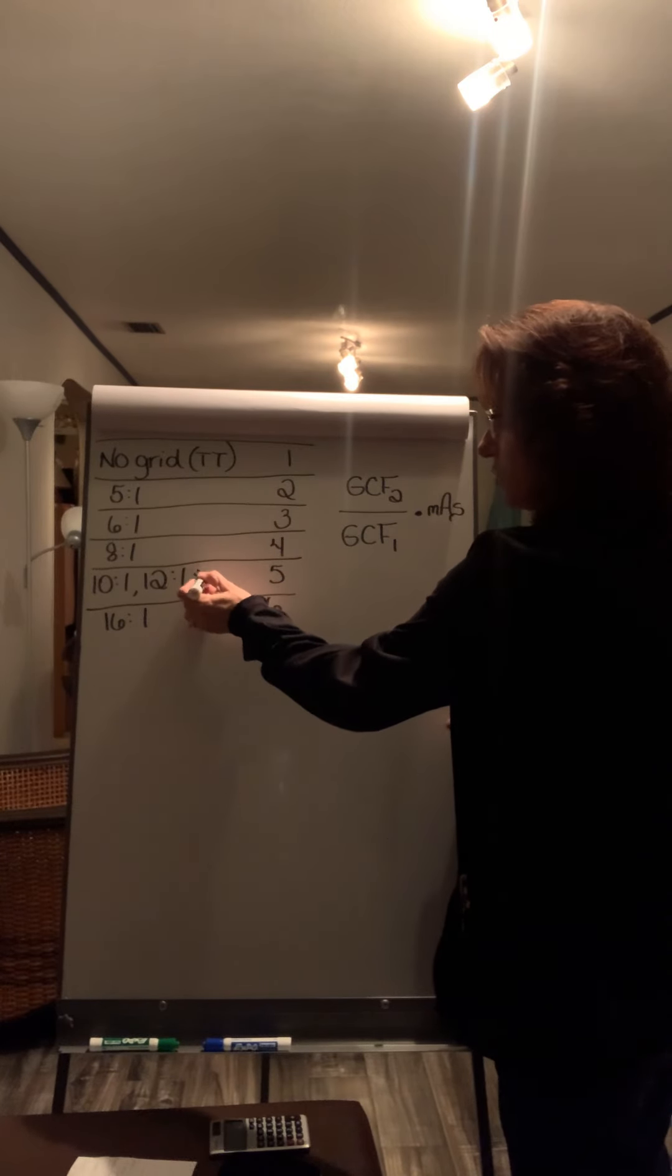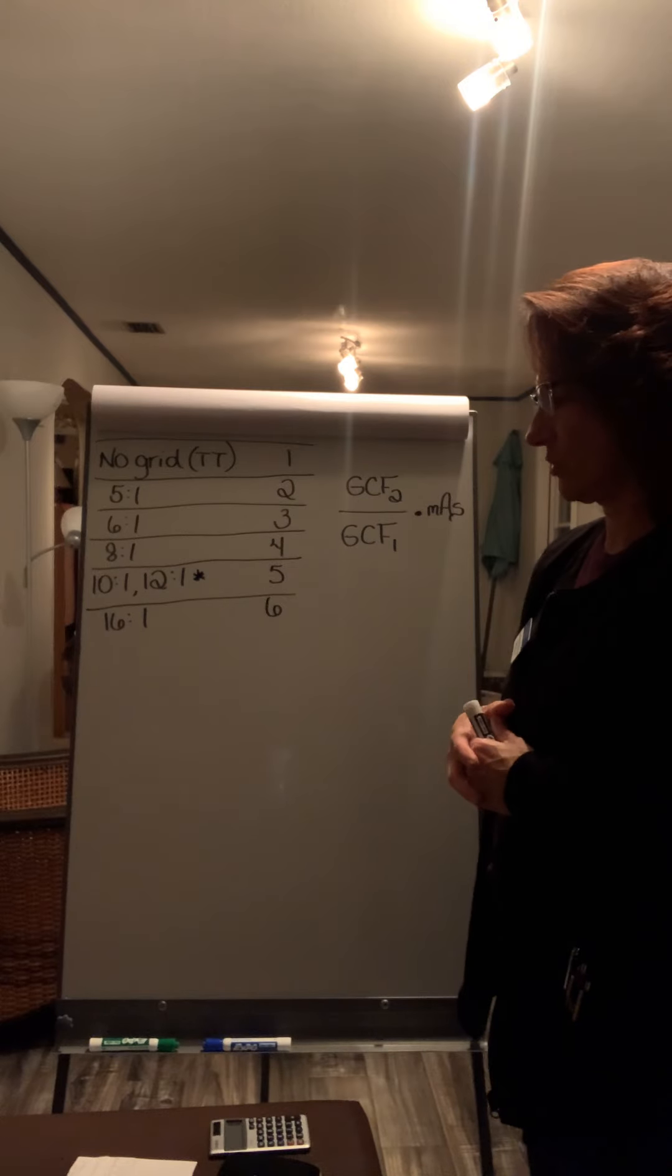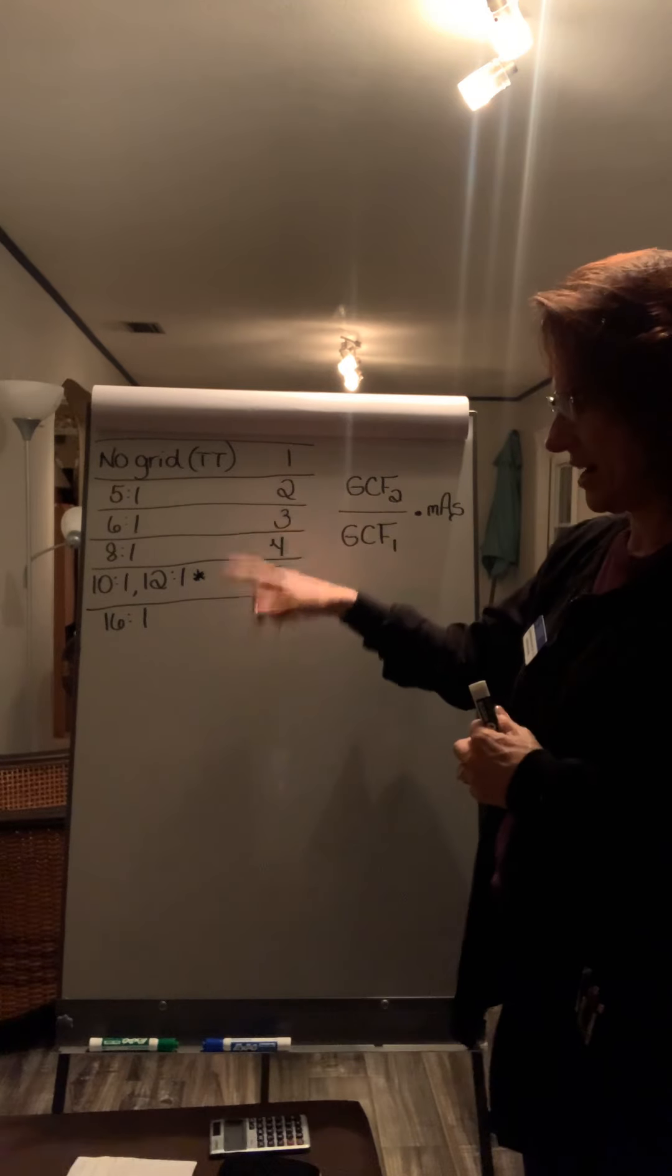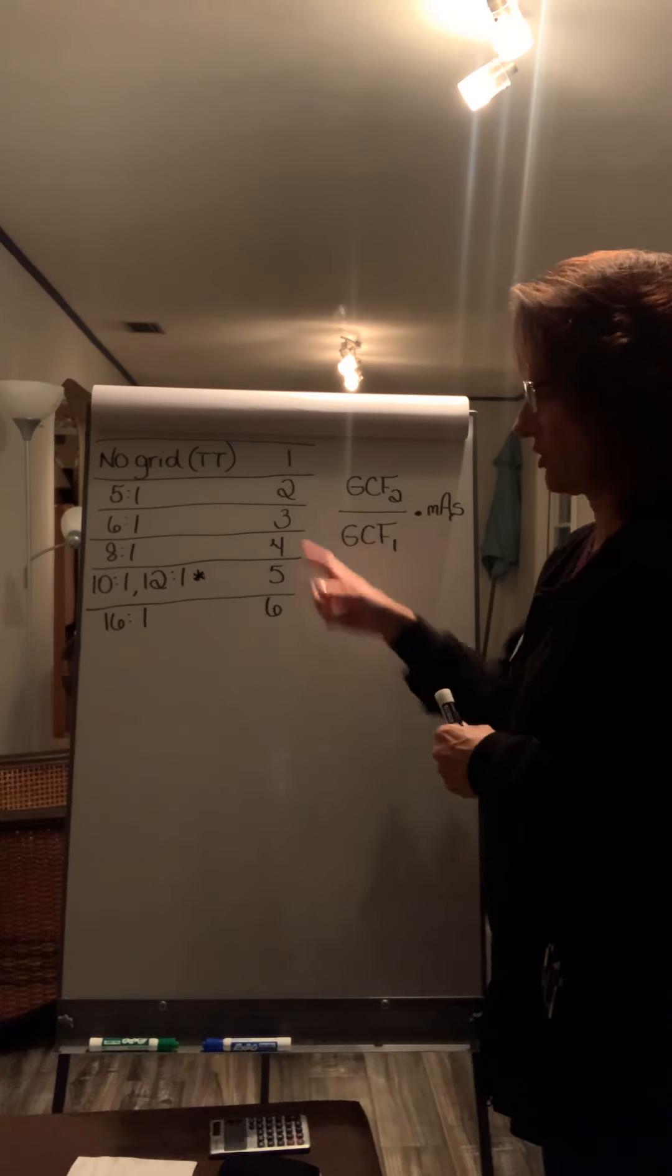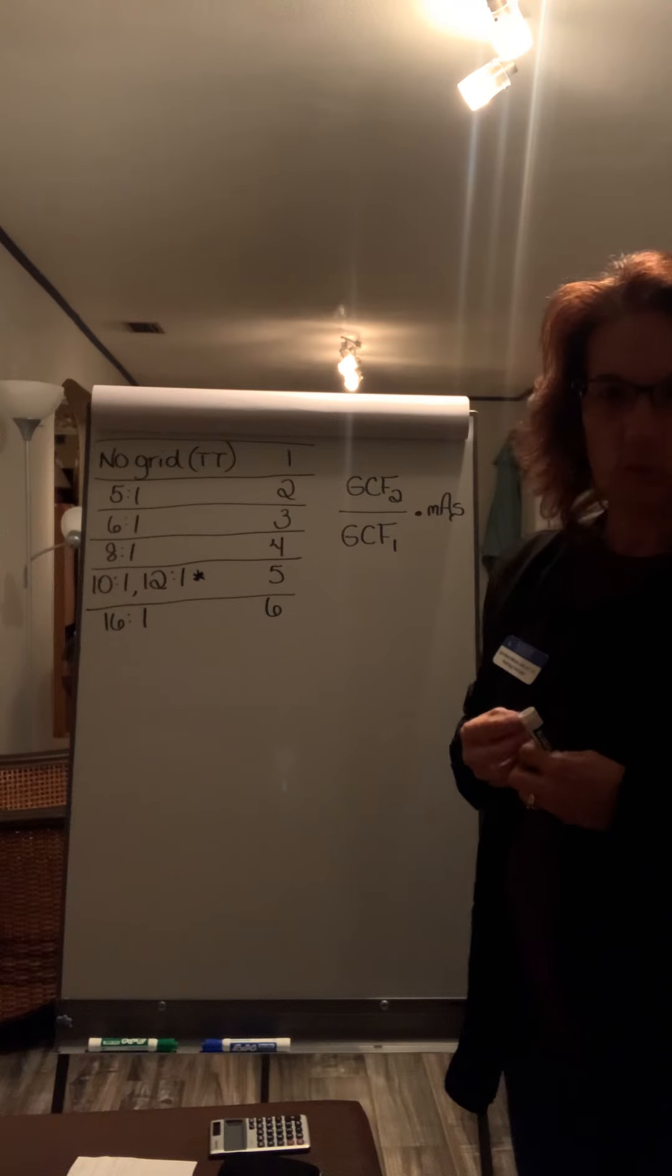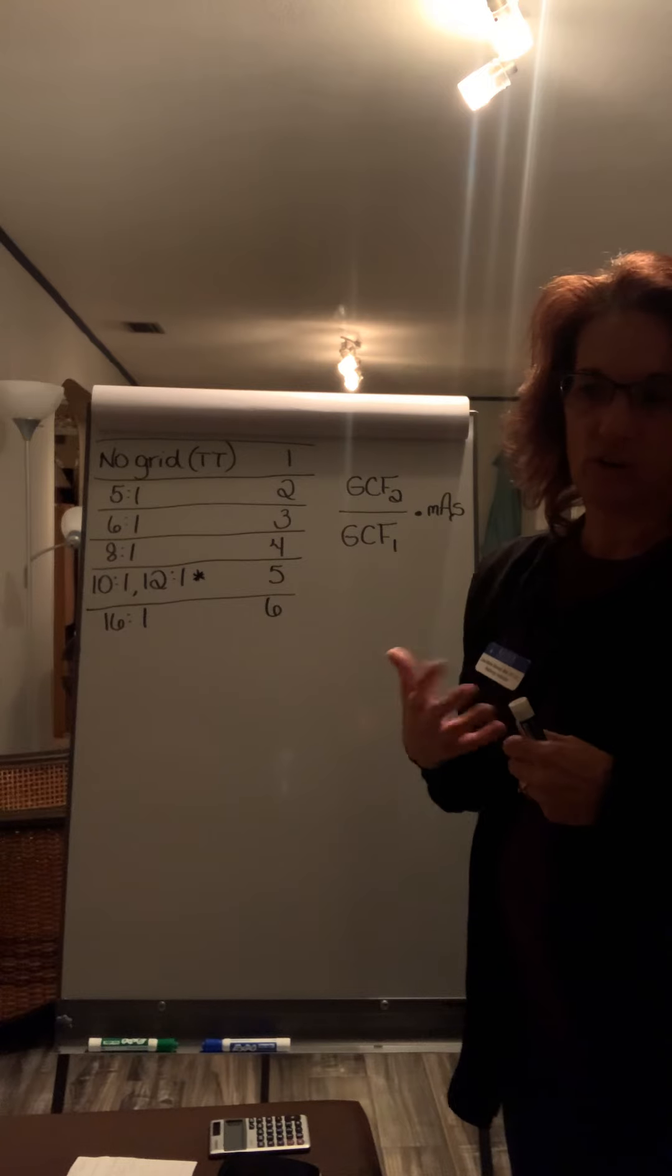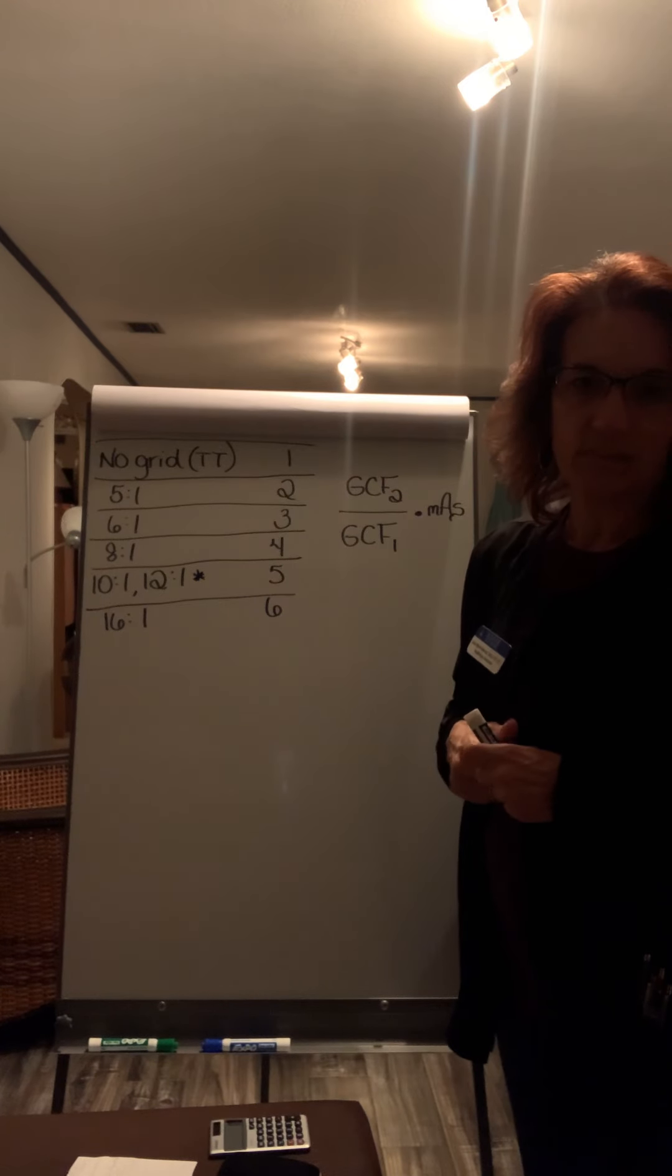Now the significance about the 10 and 12 to 1 is that most wall buckies and table buckies are either 10 or 12 to 1 grid ratios. The lower the grid ratio means there's less lead content in there. So they clean up scatter, but not as well as a higher grid ratio. When you're using tabletop, you don't need a grid. That's why it's the lowest grid conversion factor. But the higher up you go in grid ratio, not only is there more lead in the grid, but you also have to be more precise with your positioning, meaning that any angulation of the grid or misalignment in relation to the part or the photons can cause grid cutoff. So the higher the grid ratio, more lead content, and the more precise you have to be in your positioning.